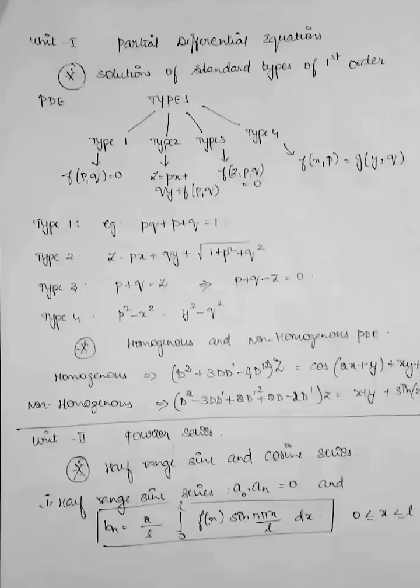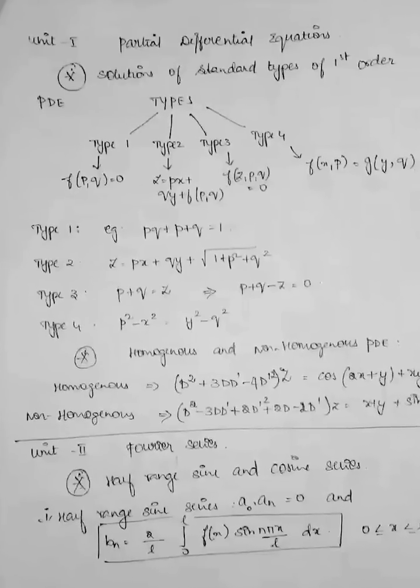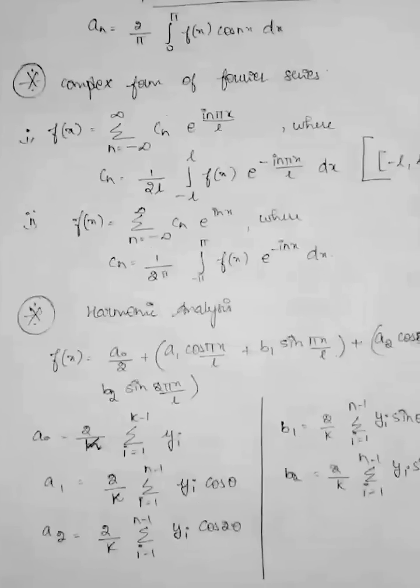So first one is half range sine series. In half range sine series, the value of a₀ and aₙ will be 0 and only bₙ is there. So bₙ formula: bₙ = (2/l) ∫₀ˡ f(x) sin(nπx/l) dx. Here the limit is 0 to l. Next topic.